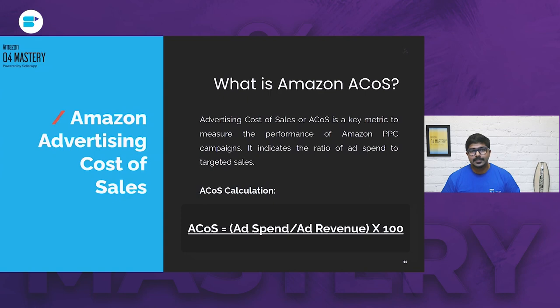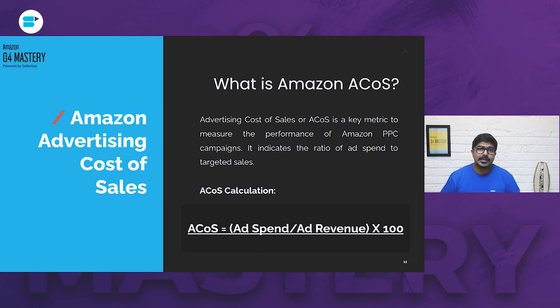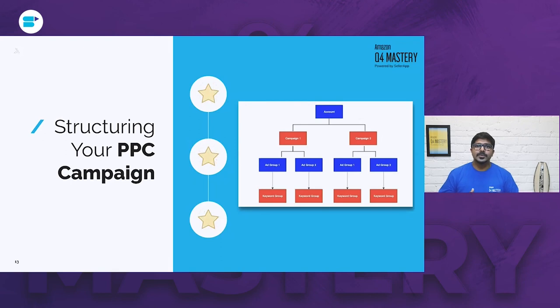ACoS targets can differ based on your situation. If your campaigns have been running a while and you want to increase profitability, you'd optimize to reduce ACoS. But if you've just launched a new product and need to improve awareness, you may need to spend more to reach new audiences — meaning a higher ACoS would be an ideal target for those campaigns. The goal is to reach your ideal ACoS relative to your business objectives.